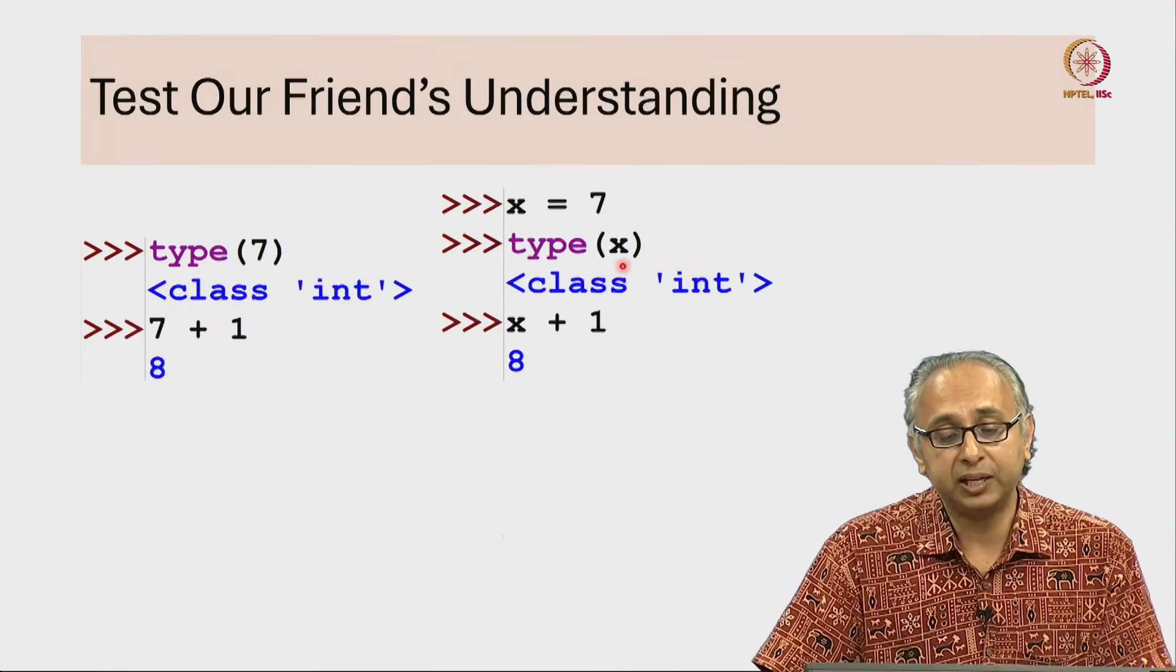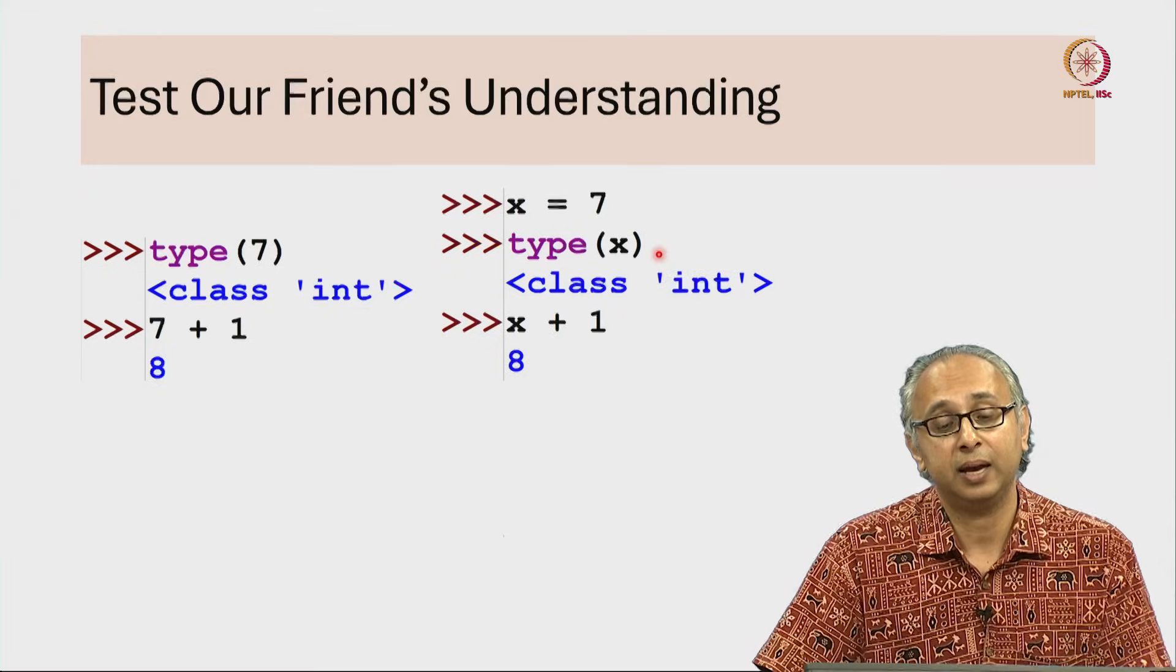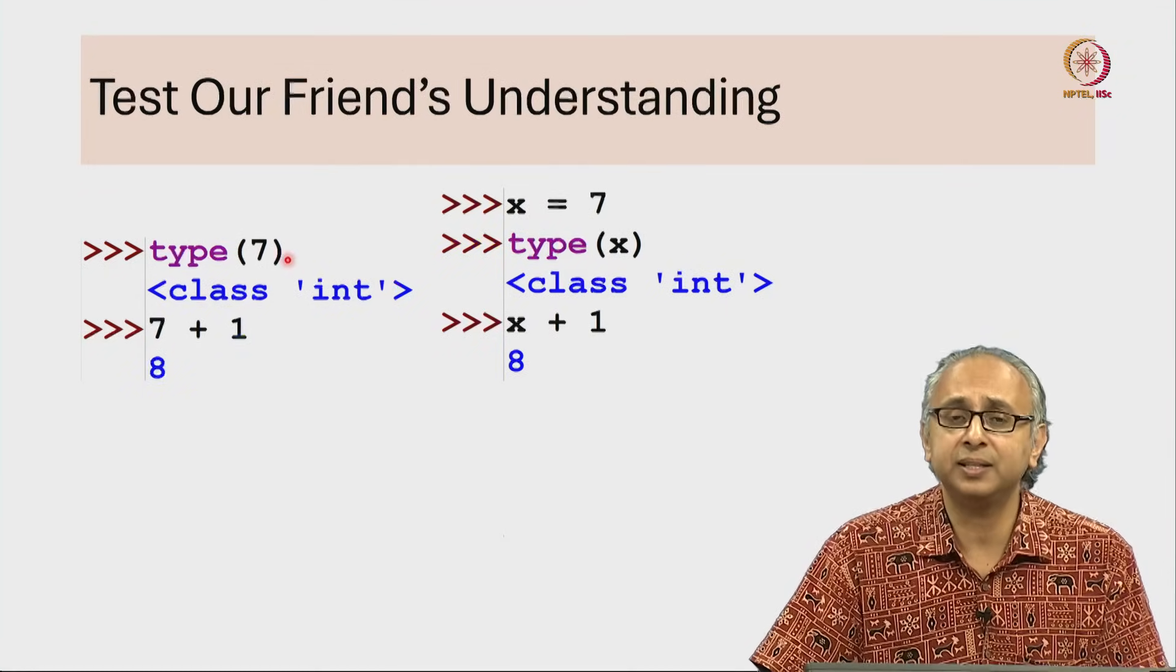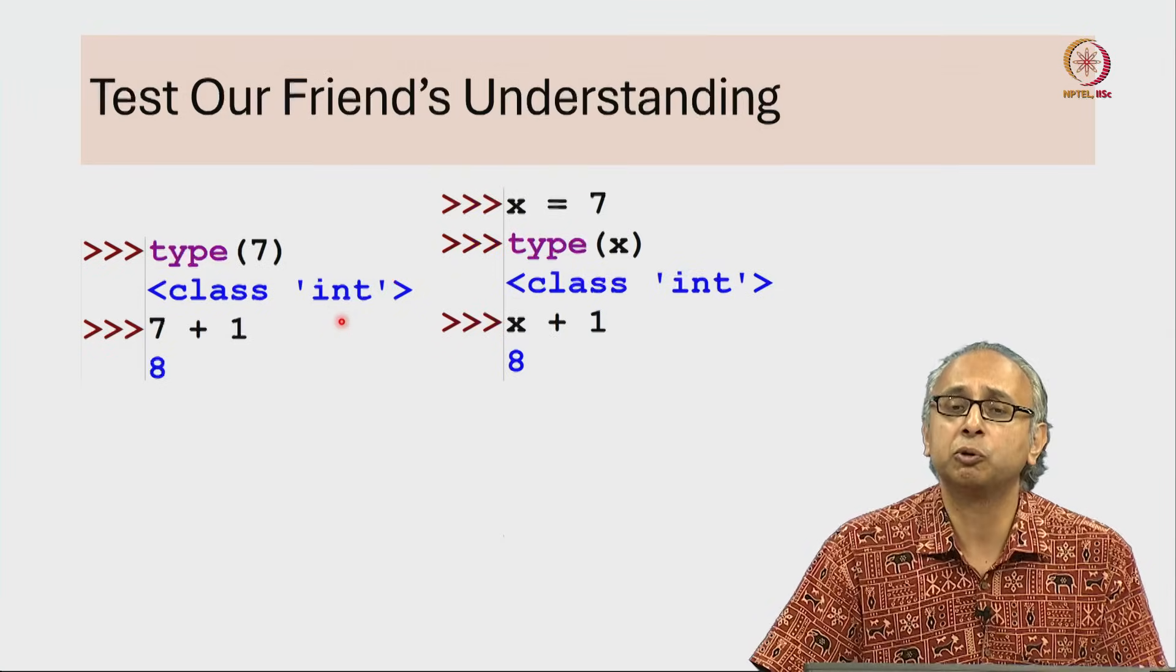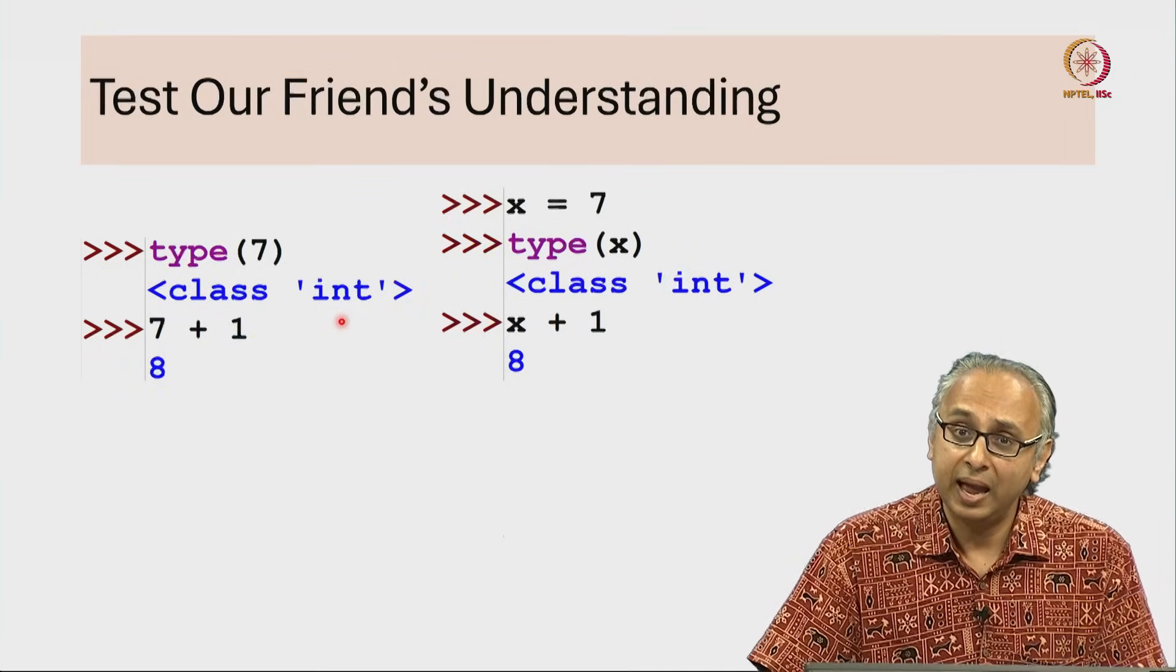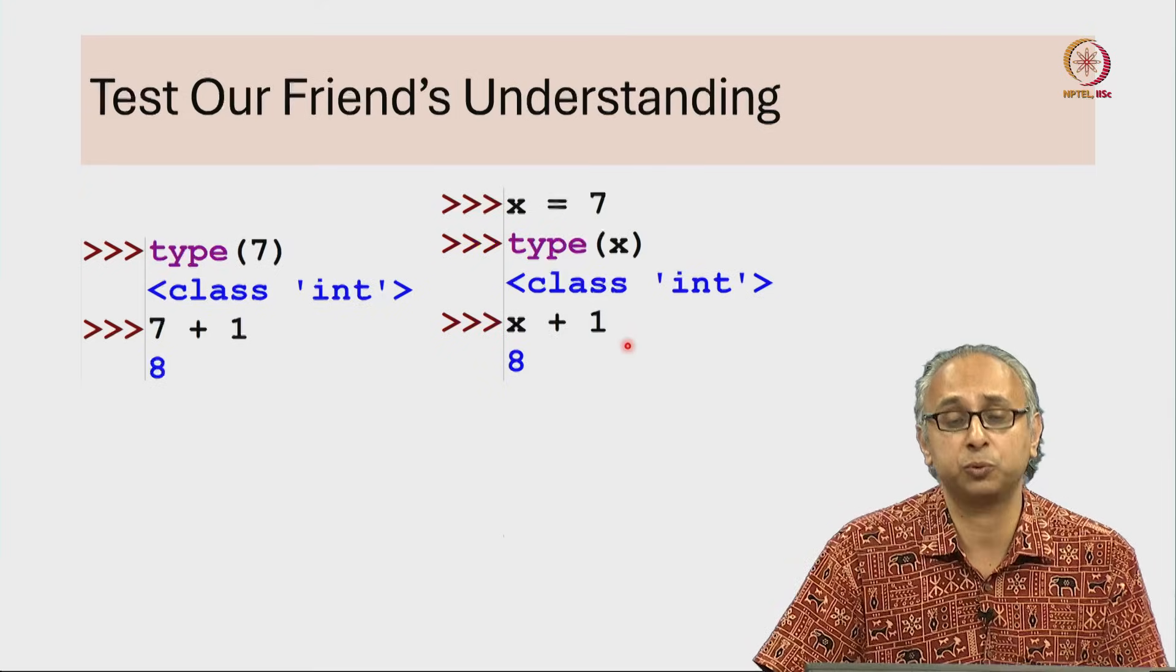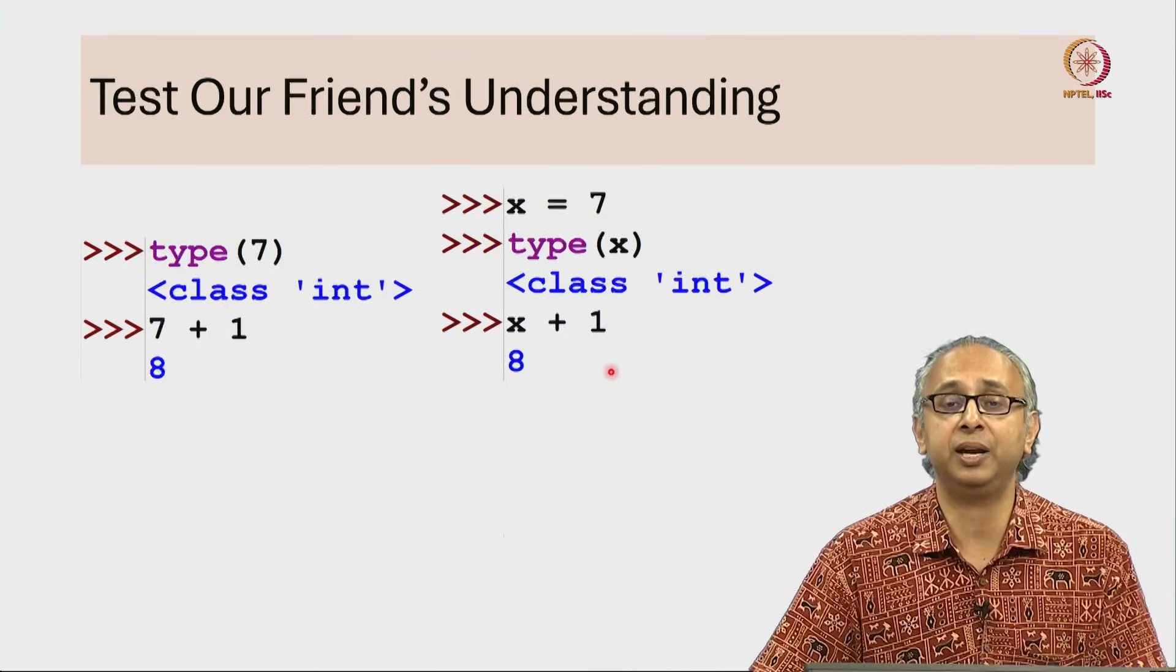Now our friend calculates the type of x and it says class int. That's very similar to calculating type of 7 which was also class int. And our friend does something similar to 7 plus 1, they do x plus 1 and that produces an answer 8.